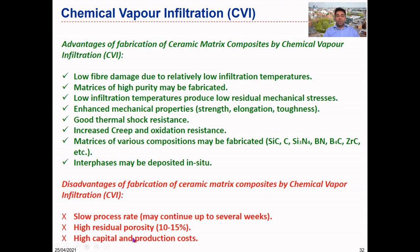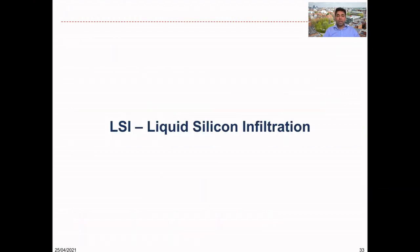Another disadvantage is high capital and production cost. The system components must withstand high temperatures, requiring significant initial capital investment and ongoing maintenance. This makes CVI a relatively expensive process. Despite these disadvantages, this process has been used for a long time to manufacture ceramic matrix composites, and is one of the best for depositing matrix materials on top of reinforcement. After this, we can look at the liquid silicon infiltration process.